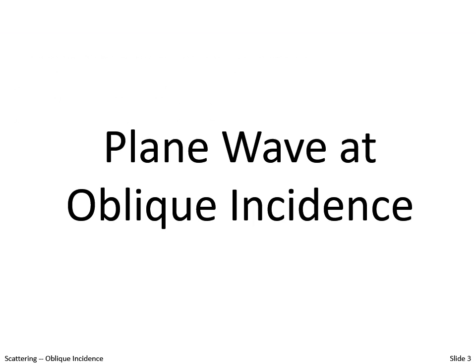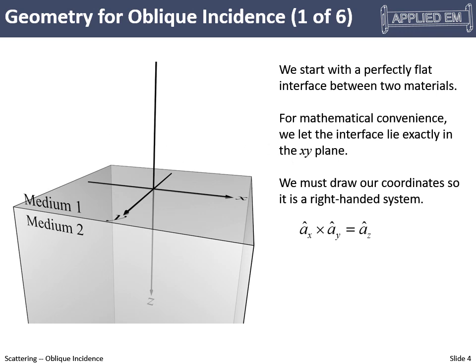We start by defining the geometry. Our incident wave travels in the positive z direction, and the interface between medium one and medium two lies in the xy plane. For the sign convention, we need a right-handed coordinate system where x cross y equals z. Using the right-hand rule, curling fingers from x to y, the thumb points in the z direction.